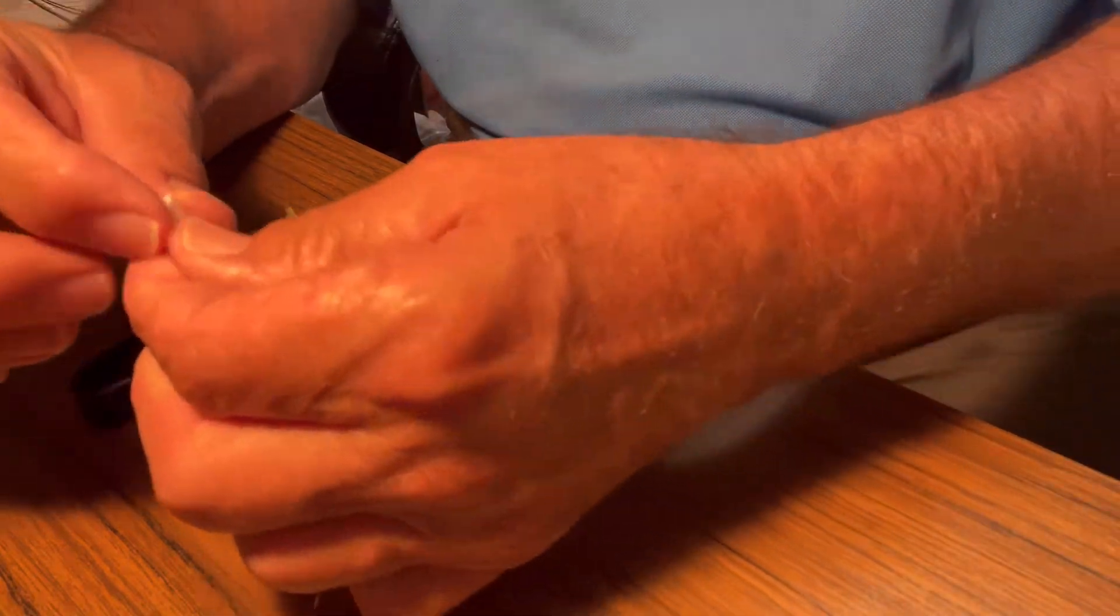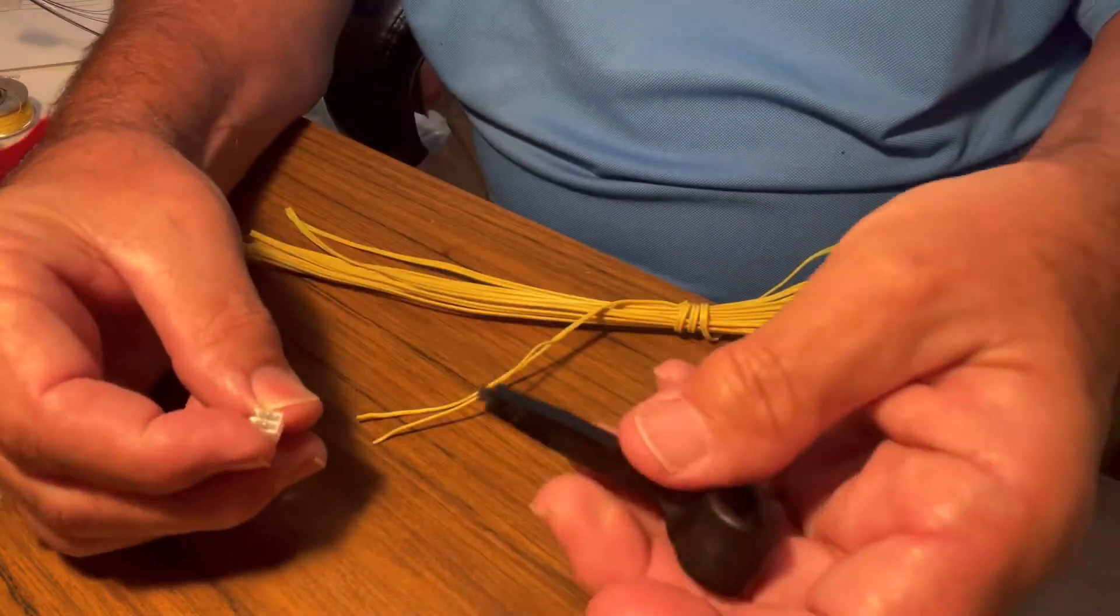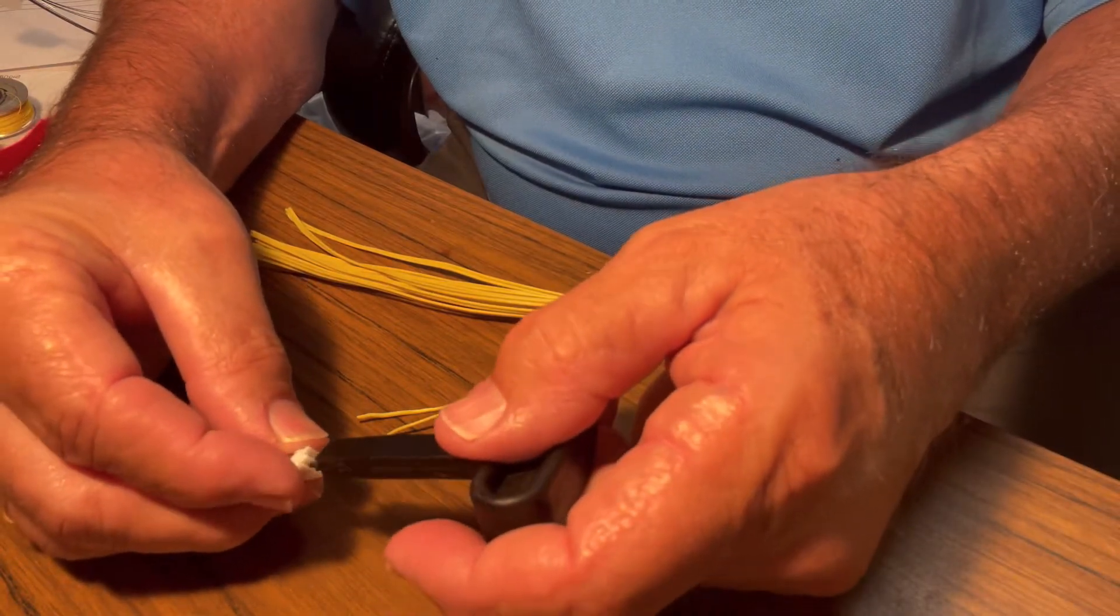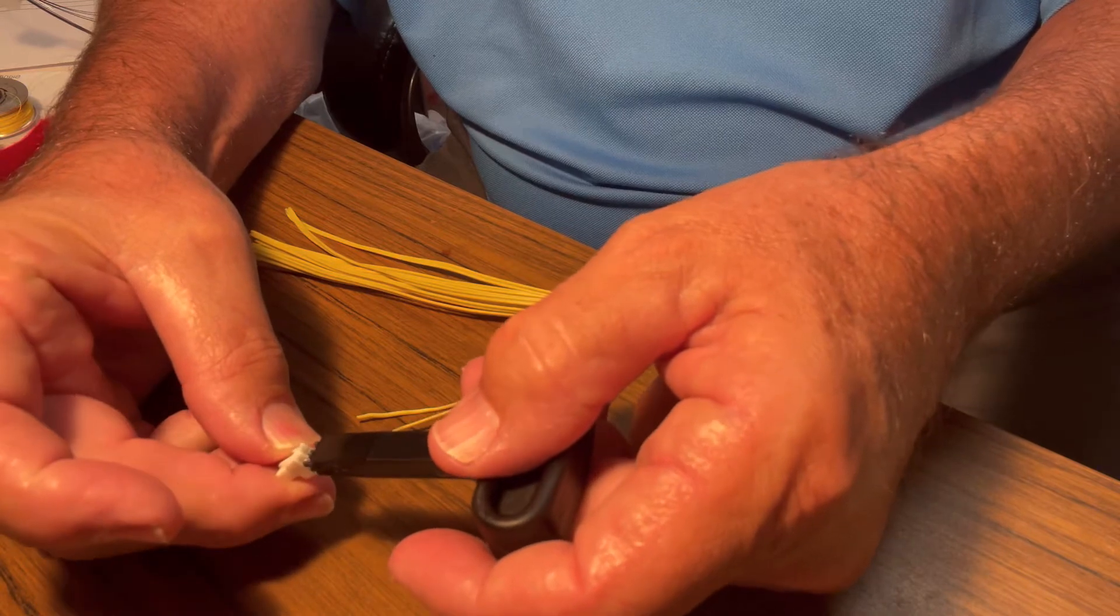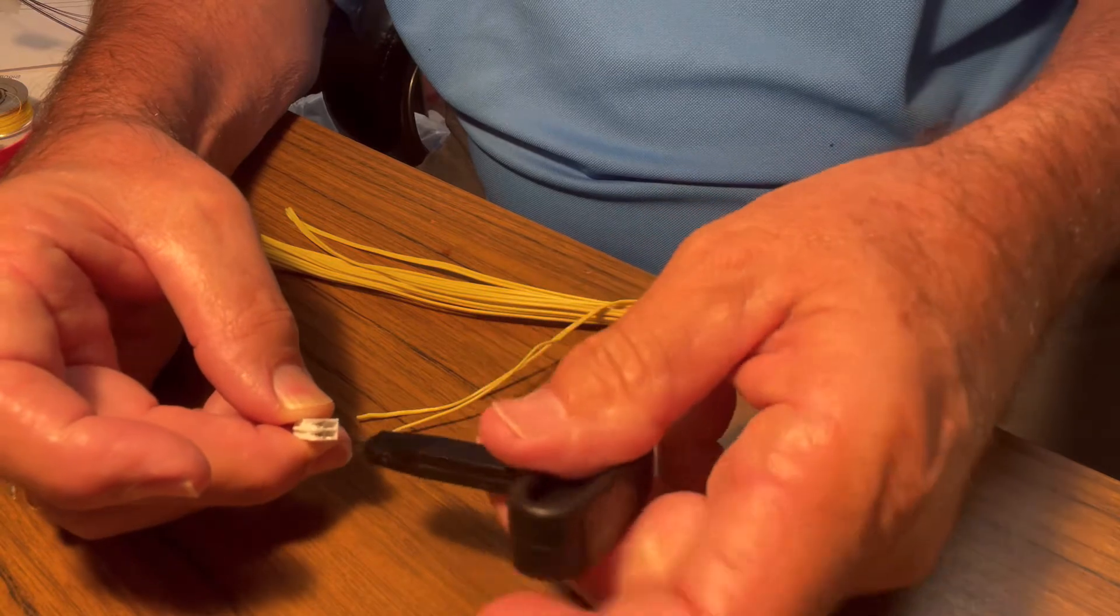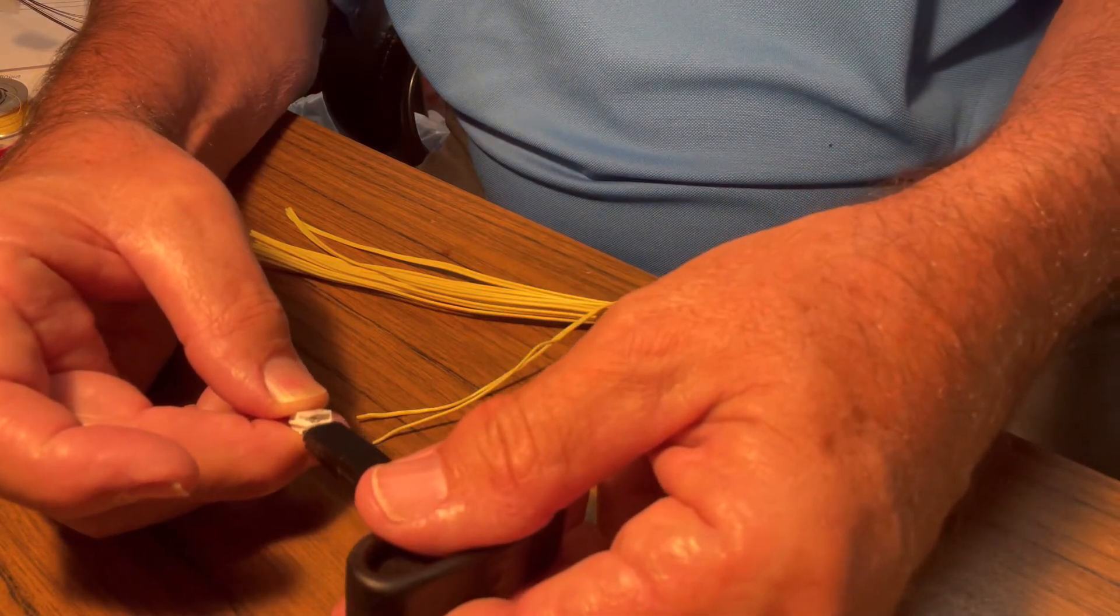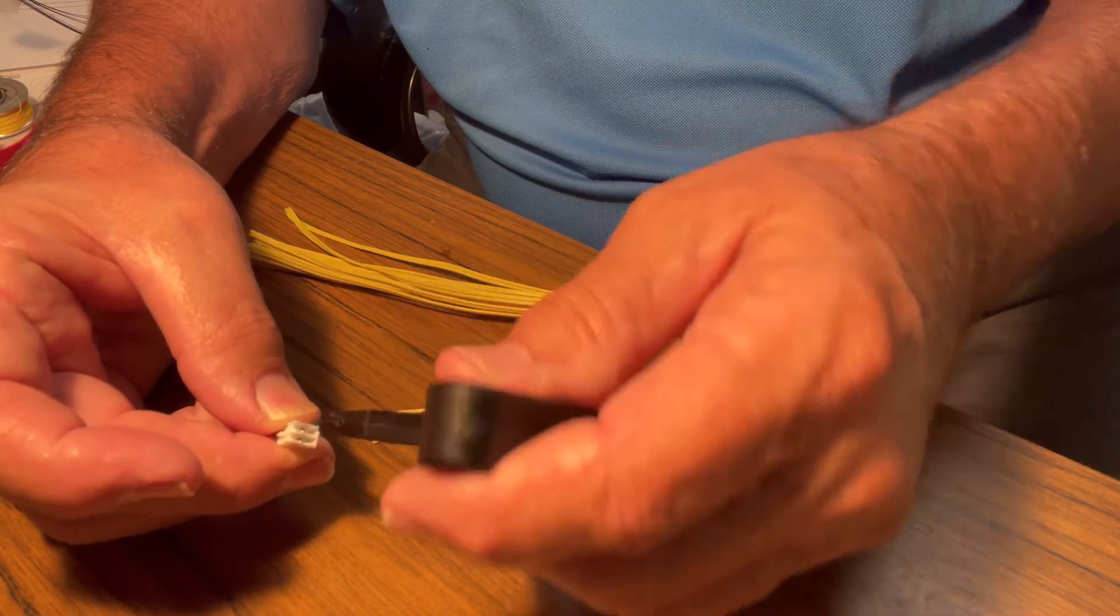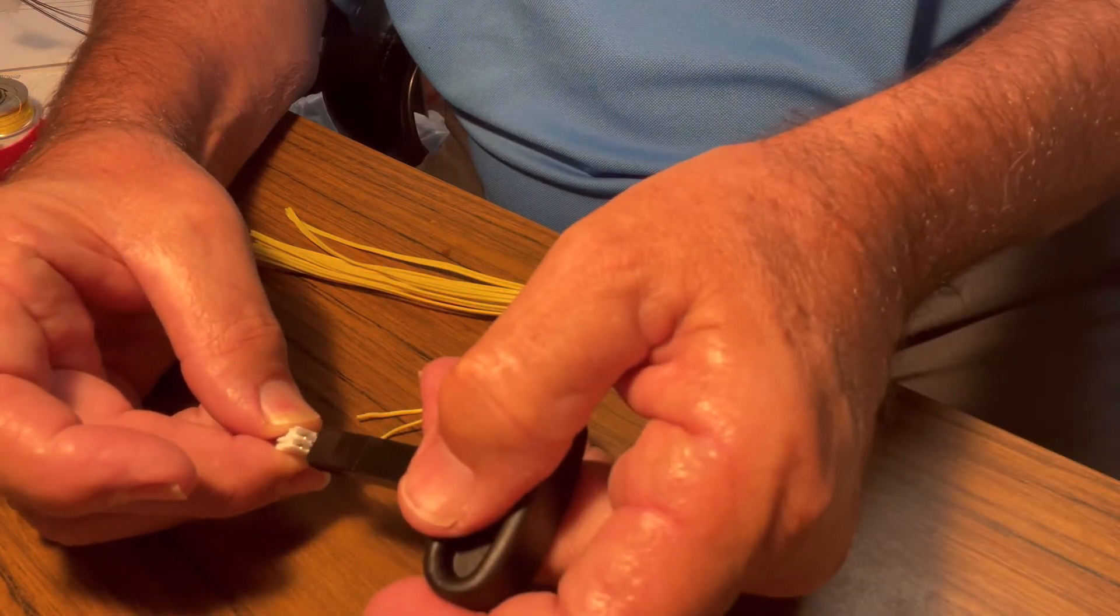Now when you first look at it, you might think the tool goes crossways like this to go across the two connections, but it doesn't. The tool goes like this. It does one wire at a time. You don't put it crossways.